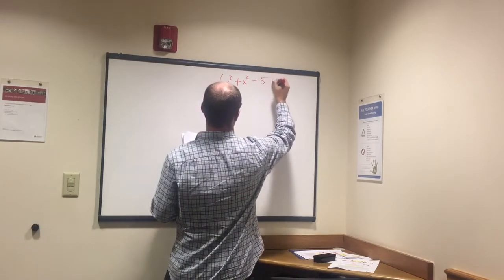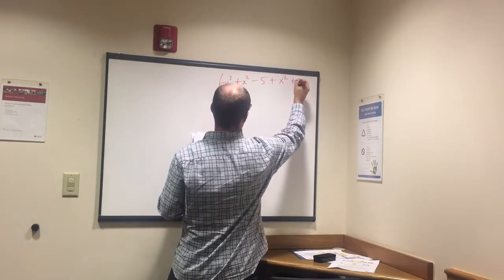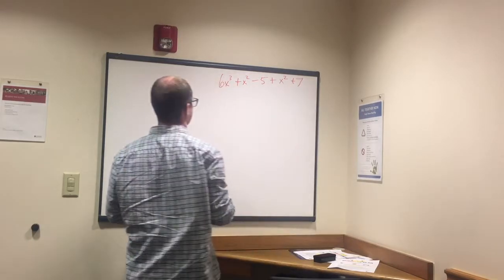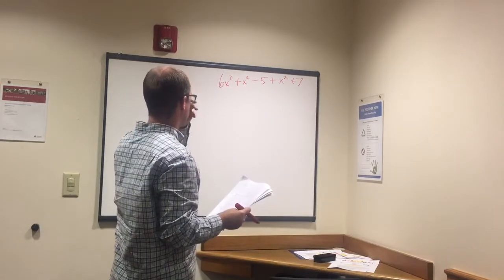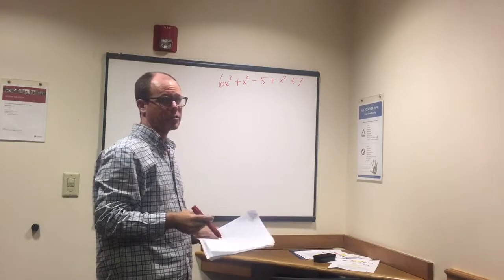minus 5 plus x squared again plus 7. So what we need to do is combine like terms and we're trying to simplify this.